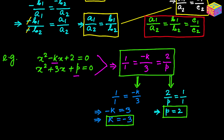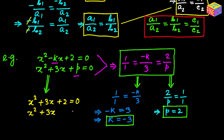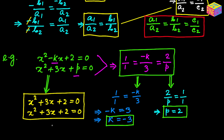The quadratic equations would look like this when rewritten using the values of k and p. The first equation becomes x² − (−3)x + 2 = x² + 3x + 2 = 0, and the second is x² + 3x + 2 = 0. You see they look identical — that's accurate because we know they have the same roots. I hope everything made sense. Thank you for watching, see you in the next video.